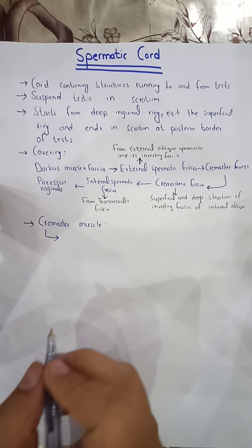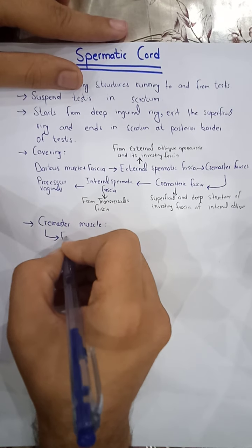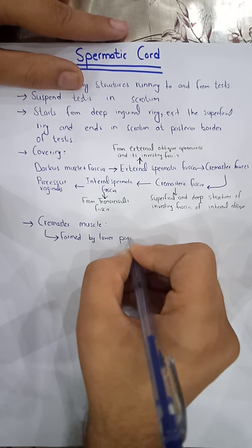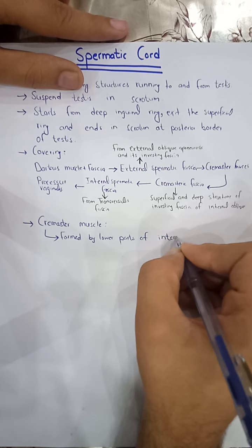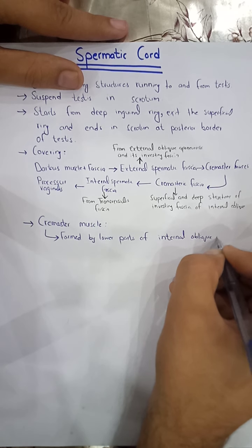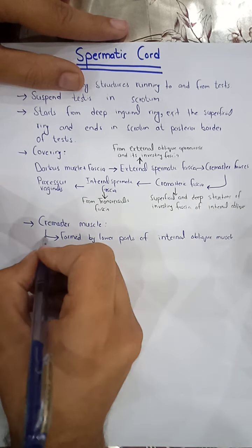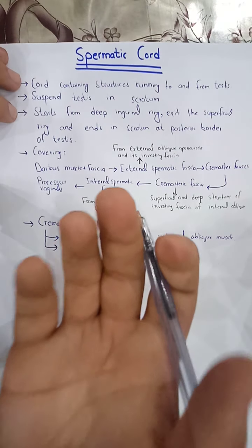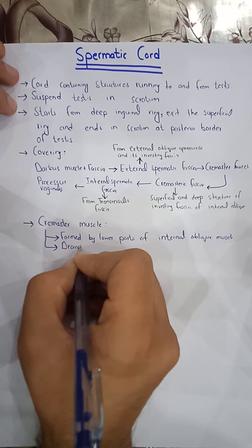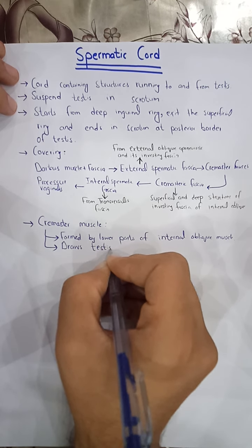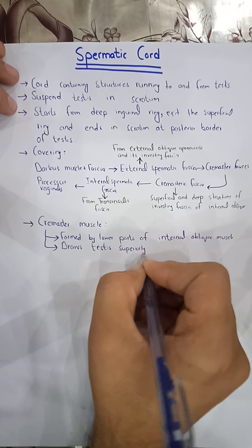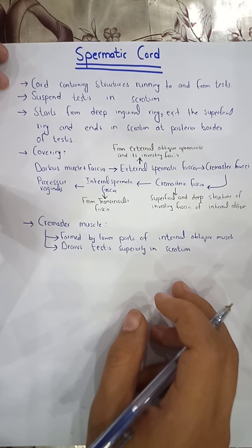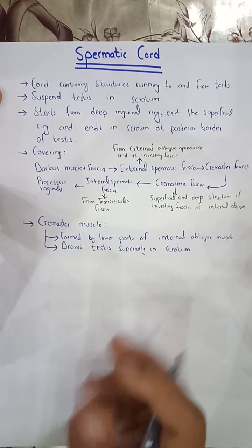The cremaster muscle is formed by the lower parts of the internal oblique muscle. Its function is to draw the testes superiorly in the scrotum — it lifts up the testes in response to a cold environment.